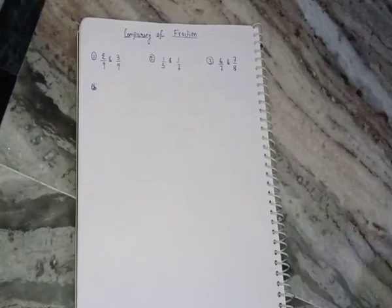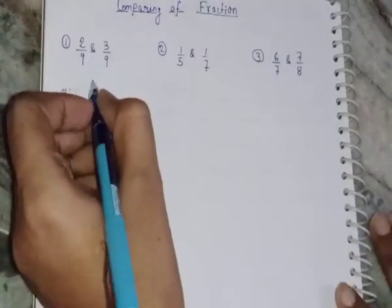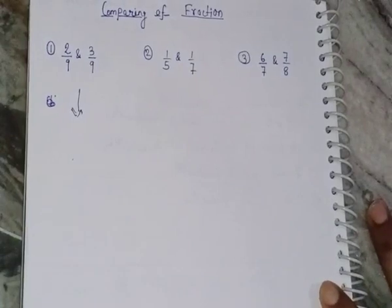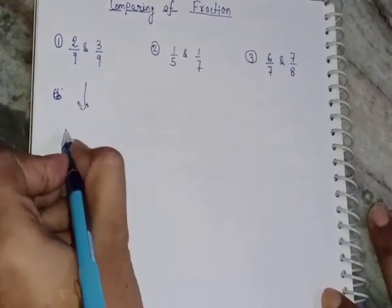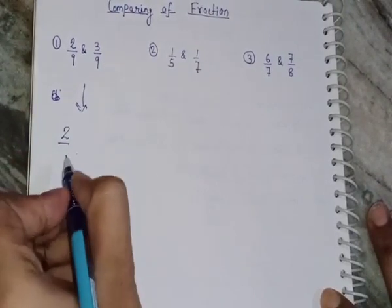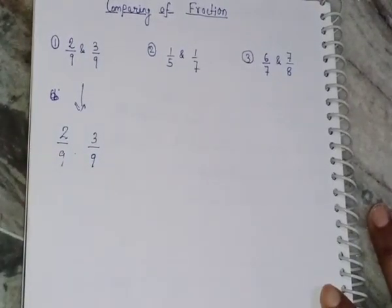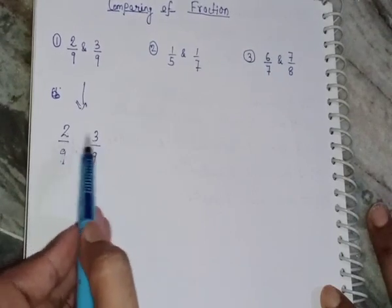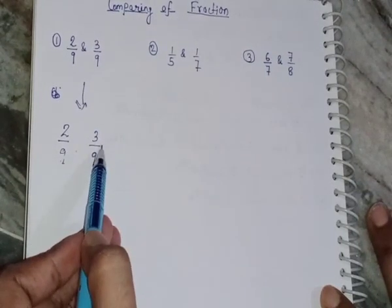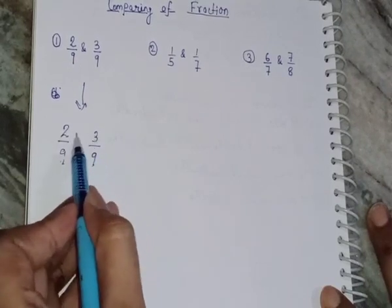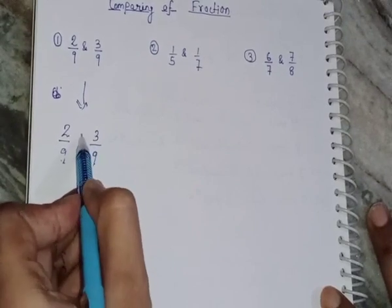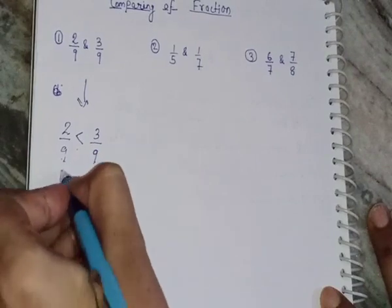So how do we compare fractions? I have written three examples here. In example number one, I have written 2 by 9 and 3 by 9. If the denominators are the same but the numerators are different, you can directly compare the fractions. Whichever numerator is greater, that fraction is greater. Between 2 and 3, three is greater, so 3 by 9 is the greater fraction.